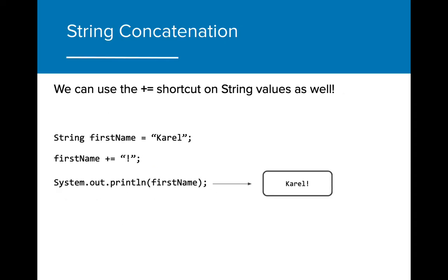Just as we could use shortcuts to add primitive values, we can use the plus equals shortcut to assign string objects additional values. Instead of having to write first name equals first name plus something, we can just write first name plus equals something, which will add something to the end of first name.